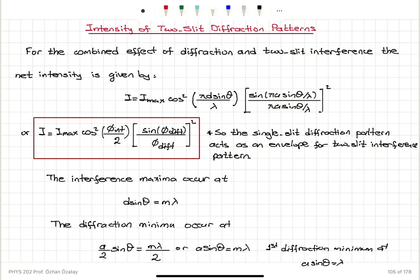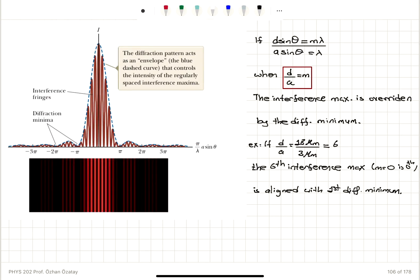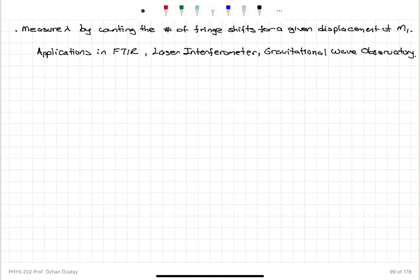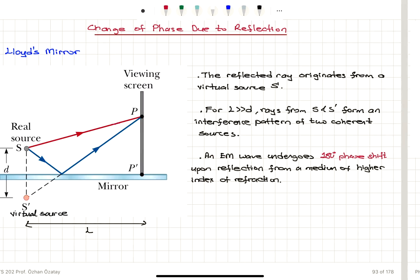Combining our result from Young's double slit experiment with single slit diffraction, we see that we have a cos²(φ_interference / 2) dependence multiplied by (sinφ_diffraction / φ_diffraction)². This tells us that single slit diffraction acts as an envelope for the double slit interference pattern, and it is possible to have an interference maximum overridden by the diffraction minimum — occurring at the 6th interference maximum for d = 18 micrometers and A = 3 micrometers.